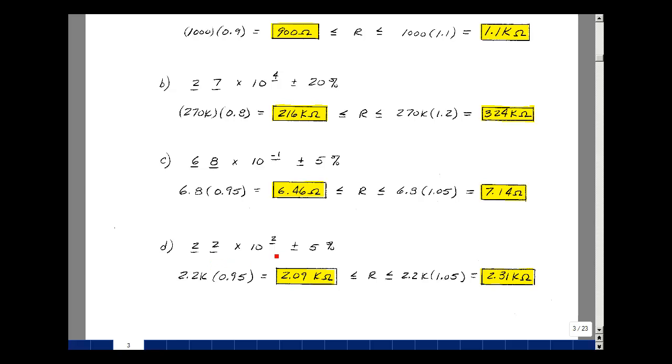which is 2.2 k, and then a 5 percent tolerance would be multiplying that nominal value by 0.95 and 1.05, giving me 2.09 k and 2.31 k.